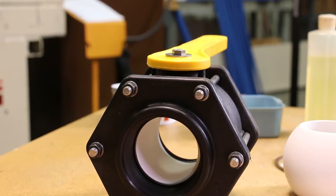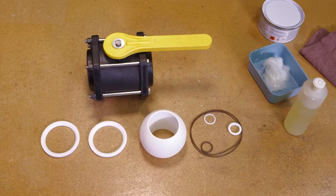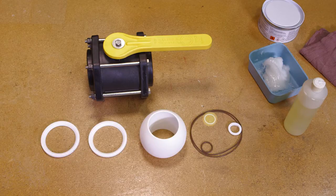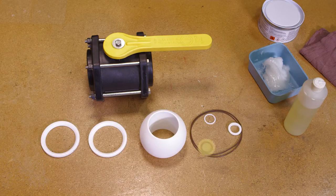This short banjo video will show you how to rebuild banjo bolted valves. Your repair kit may include a new ball, ball seats, body o-rings, upper stem bushing, thrust washer and stem o-ring.